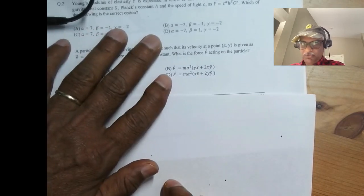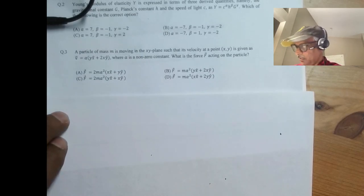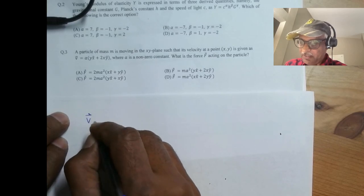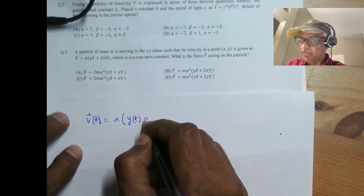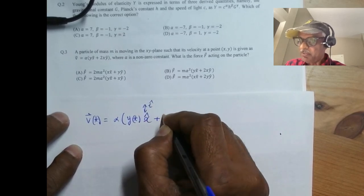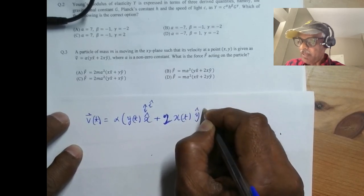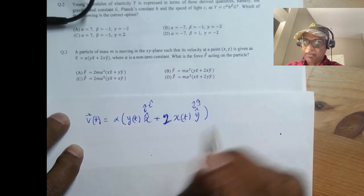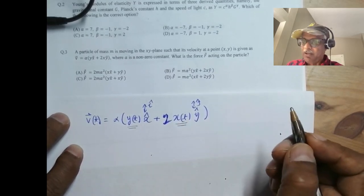Maybe it's testing if you know your definitions in terms of derivatives. So it says velocity as a function of time is alpha y function times x hat, this r hat is not a function of time, plus 2 times 2xt y hat. So this is j hat, not a function of time.